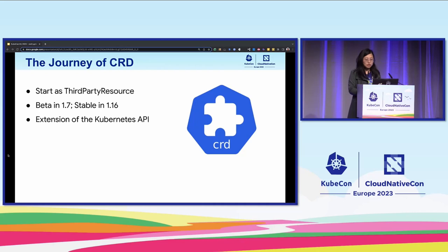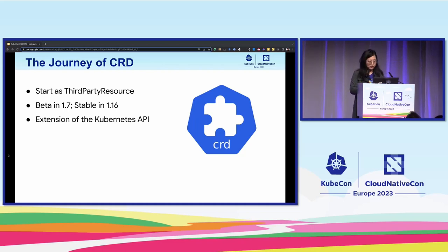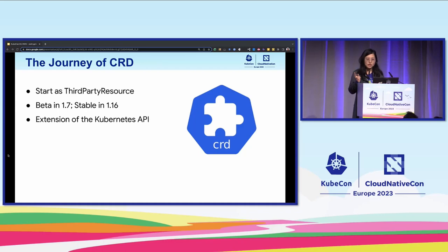The journey of CRD. In the very early stage of Kubernetes, we realized that keep adding built-in APIs is not going to be a long-standing solution for a variety of usages. That's when custom resource definition came into the picture. Initially known as the third-party resource, it has been stable since 1.16. It allows users to extend and customize the Kubernetes API with their own resources, and it still remains one of the most important extension mechanisms inside Kubernetes. Many core Kubernetes functions are now built using custom resources, making Kubernetes more modular.